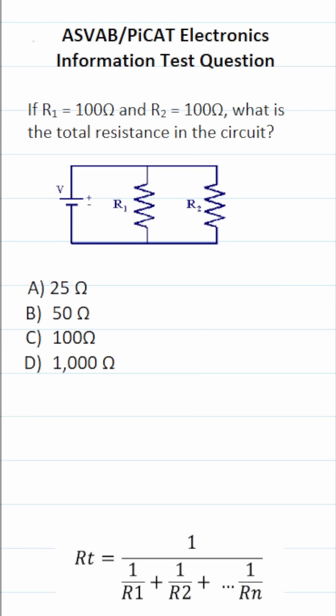So by looking at this circuit, you should be able to say that these two resistors, R1 and R2, are in parallel with each other. Therefore, the total resistance in the circuit, R of T,